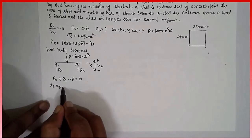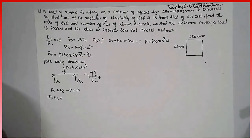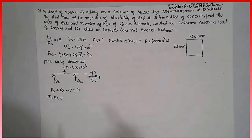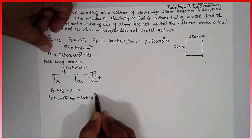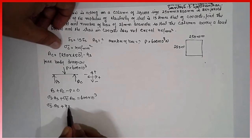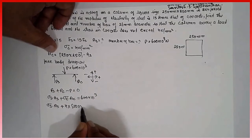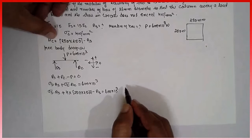Ps plus Pc minus P is equal to zero. Sigma s into As plus sigma c into Ac, 250 into 250 minus As, is equal to 600 into 10 raise to 3. Equation 1.